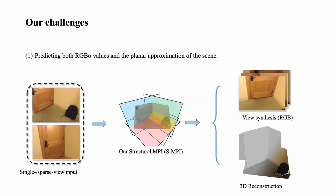Although our motivation is straightforward, there are great challenges in the construction of an SMPI. First, the network not only needs to predict RGB alpha values but also the planar approximation of the scene.